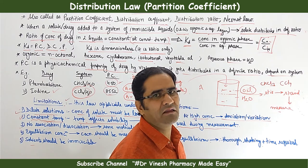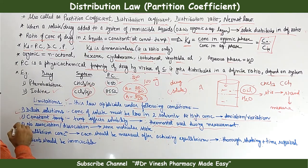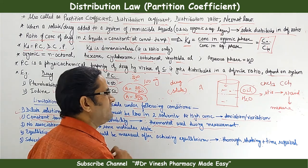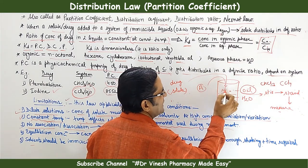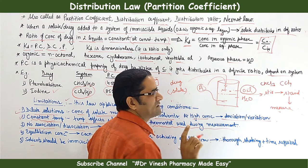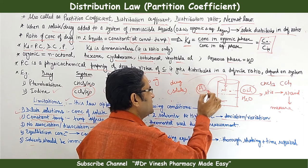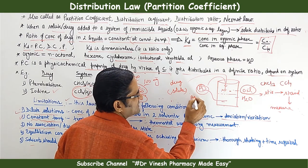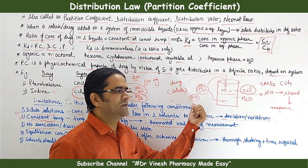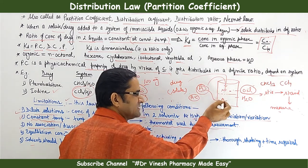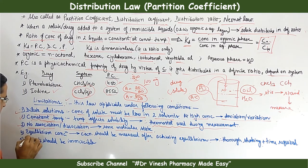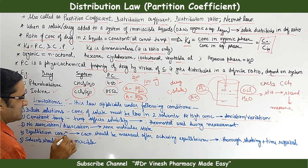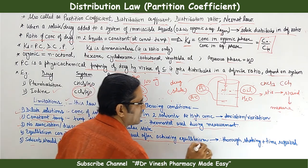Third limitation: there should be no association or dissociation — the drug must remain in the same molecular state. If drug A enters a phase and forms a complex AC with another substance, the law does not apply. Drug A should remain as A only.